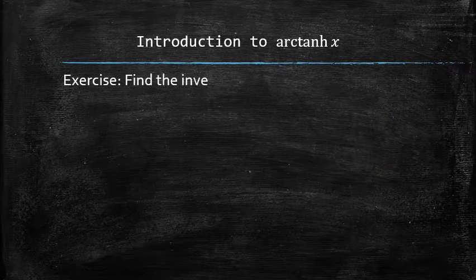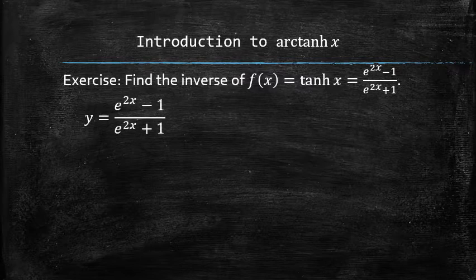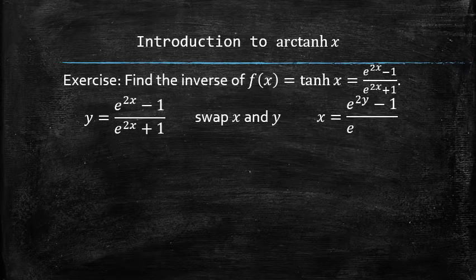Let's find the equation of the inverse of the hyperbolic tangent function. To find the inverse, we first swap the x and y in the equation. And now the goal is to isolate the y variable.